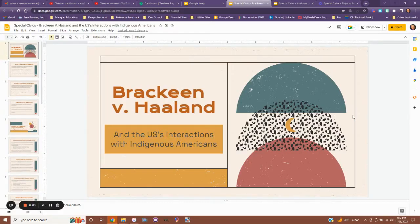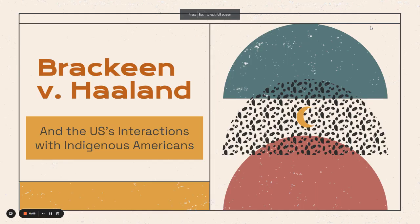Hello and welcome back to Civics. Today we're going to be talking about a specific upcoming Supreme Court case, Brackeen versus Holland, and the U.S.'s interactions with Indigenous Americans. I think it's an important part of our history as the United States and also part of our civic discourse and our civic responsibility to understand how our nation interacts with the Indigenous people of our country and how that's changed over time. This presentation is going to talk about this particular Supreme Court case and how it fits into our general history of interacting with the Indigenous people of the United States.